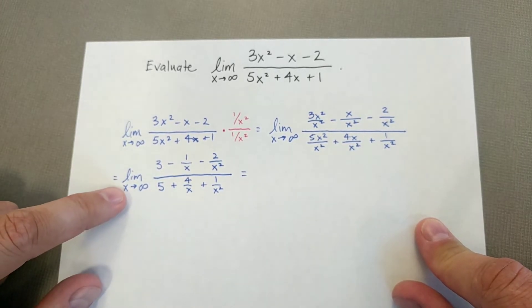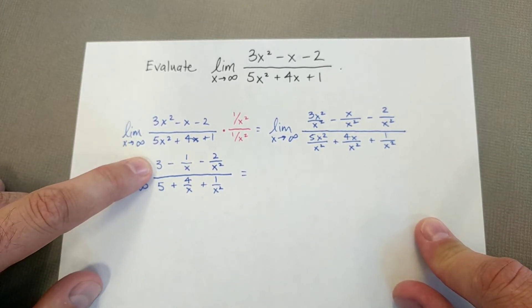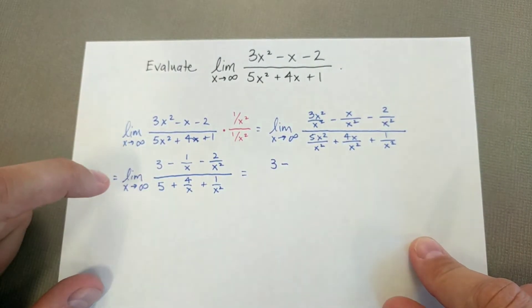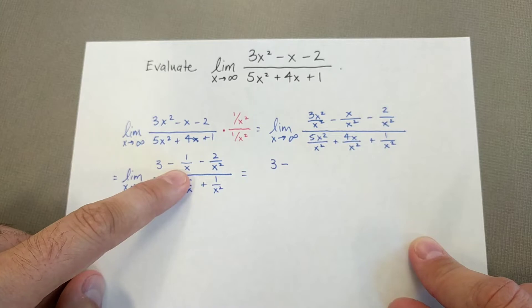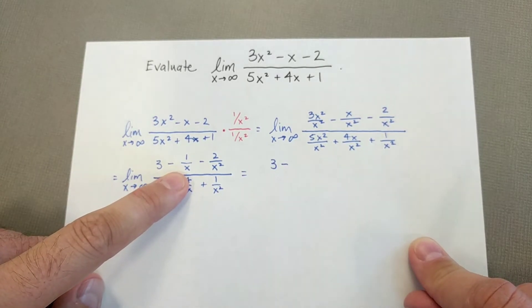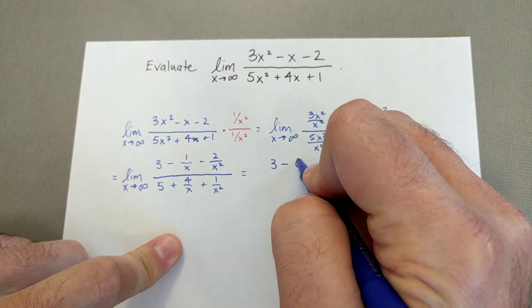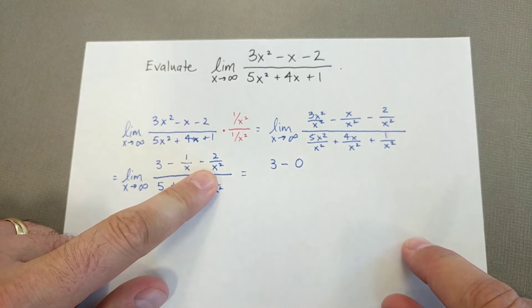So let's start here. The limit of 3, well, it's a constant, so that's 3. Minus the limit of 1 over x. Well, as x gets really big, that starts to approach 0, so that's just 0. And then same thing here. Minus, this will approach 0 even faster than this one here because it's an x squared.